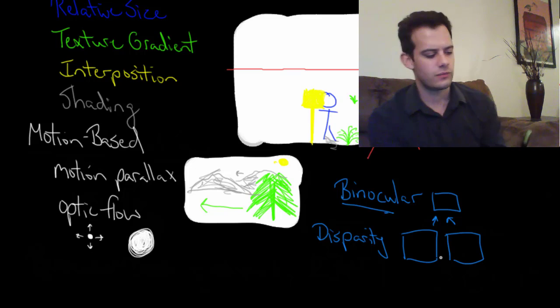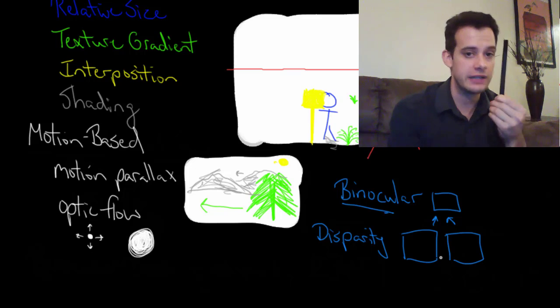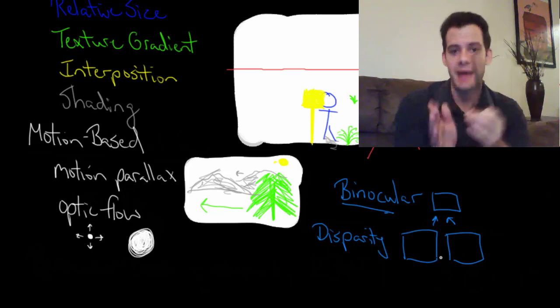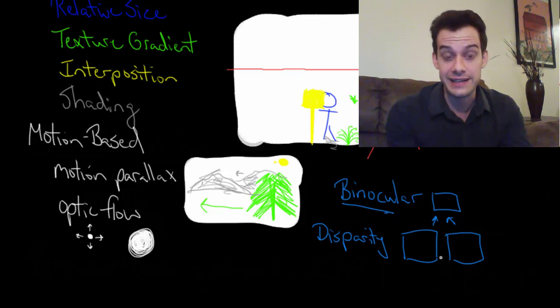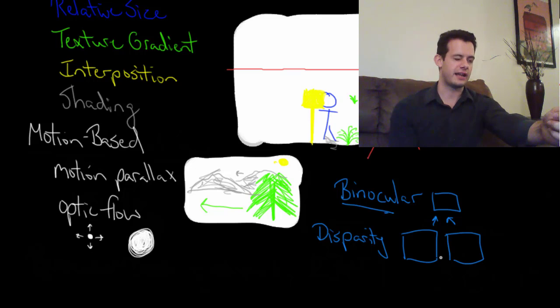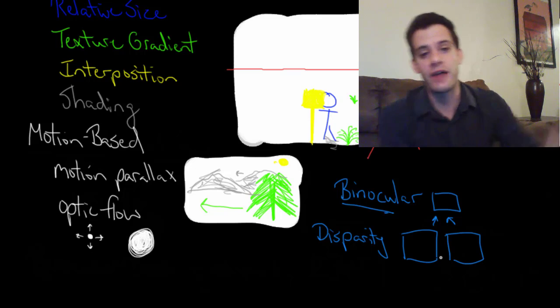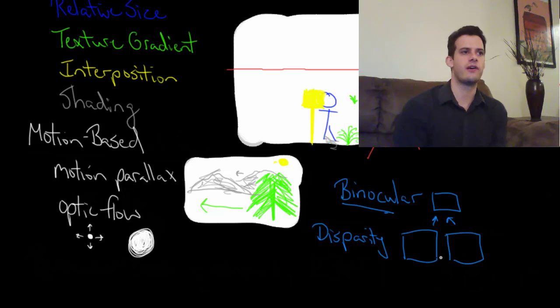And so the way that these two views differ helps us to judge depth. So how can you demonstrate this? Well, if you hold an object really close to your face and you view it with just your left eye and then just your right eye, you see that it sort of jumps back and forth. It's on the far right side of your visual field for your left eye, but on your right eye it's on the far left side of the visual field. It's in very different places. And that tells you that it's very close to you. Whereas if you hold it at arm's length and you do the same thing, it moves a little bit when you switch eyes, but not that much.